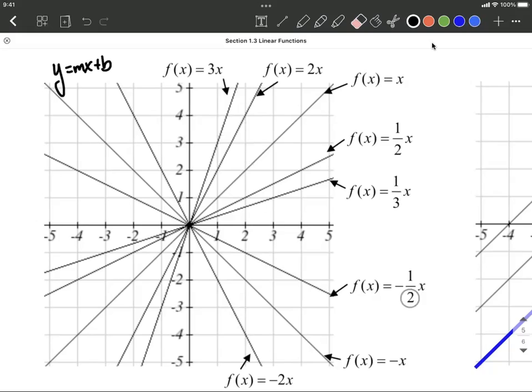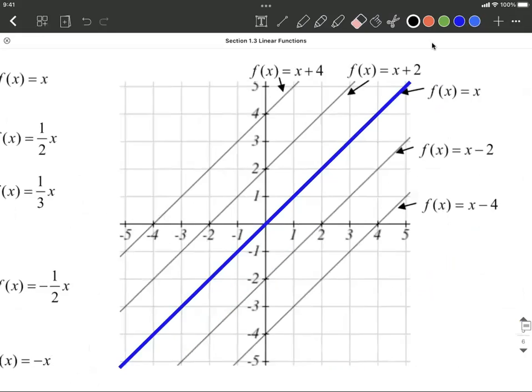except for like negative 1 half. You can think that is down 1 and to the right 2. The bigger those numbers are, they're more steep but in the negative direction.